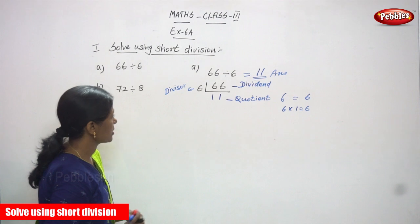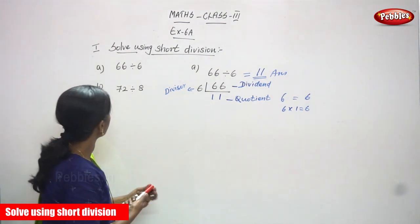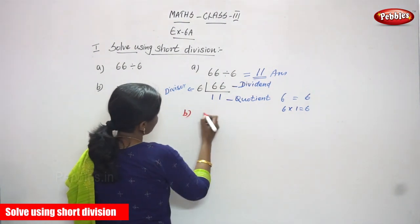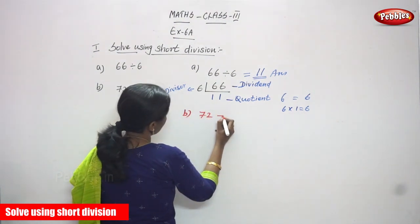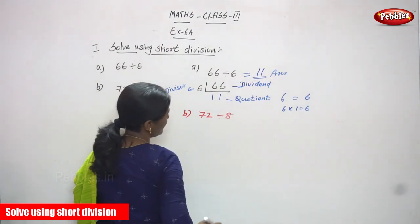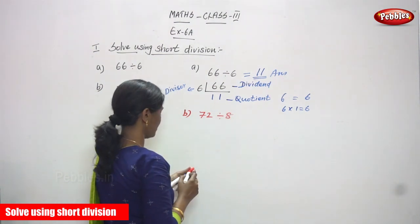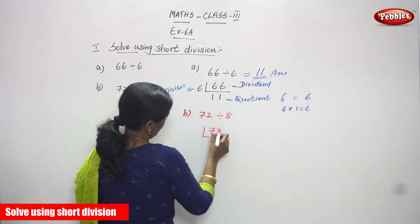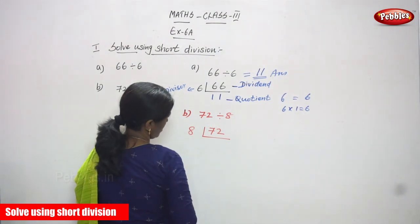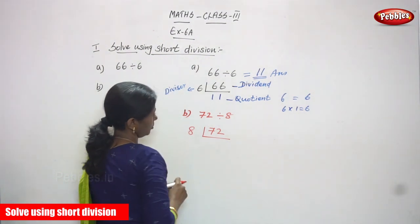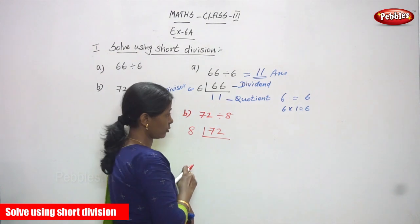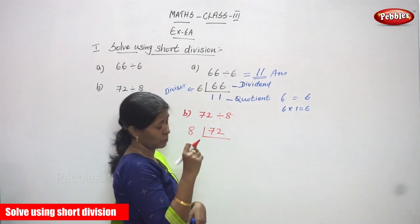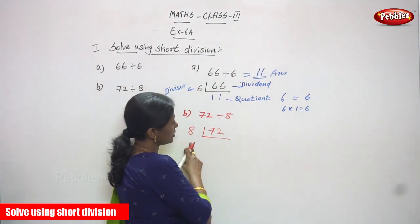Second question, B question: 72 is going to be divided by 8. Write 72 and 8. This is the short division method. You have to do some subtraction in your mind. 72 is going to be divided by 8.